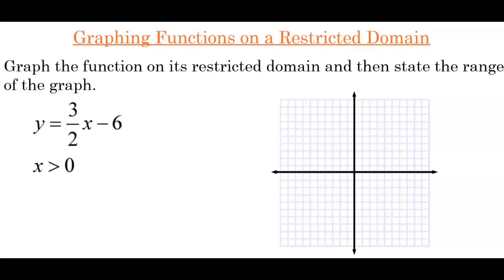Our first example: graph the function on its restricted domain and then state the range of the graph. The function is y equals (3/2)x minus 6, and the domain is x is greater than 0. The function they gave us is a line. They wrote y equals rather than f(x) equals, but we've discussed how those are synonymous and can be interchanged.